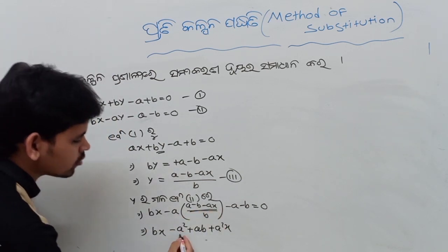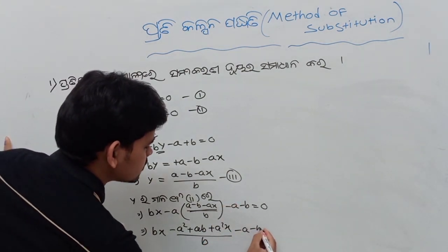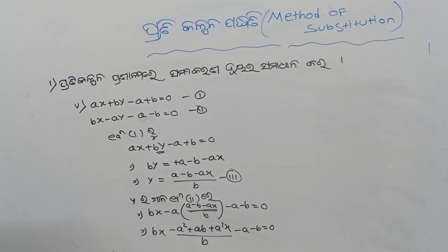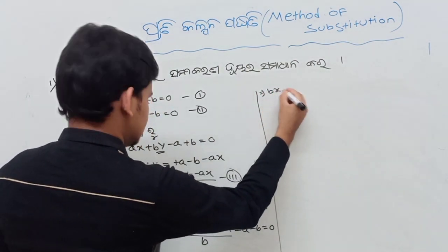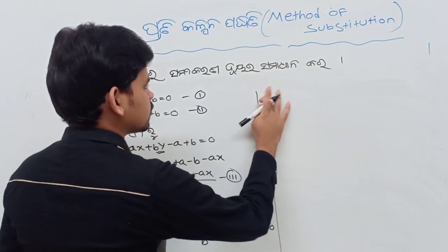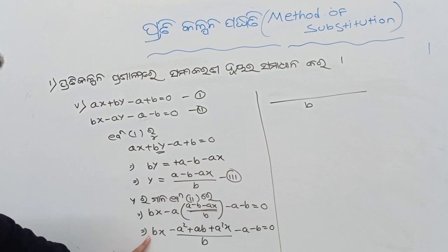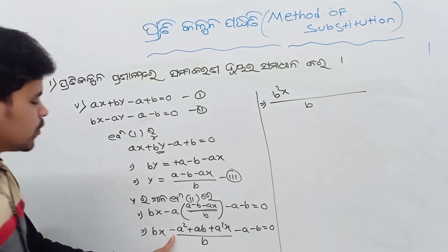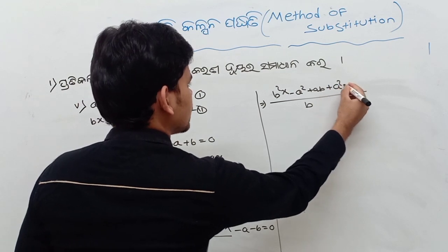How do you do that by D? Next how do you do that minus A minus B equal to 0? Next minus A minus D equal to 0. And next, how do you do that by D minus B greater than B of A? Then it is called B. BX into B — B squared x. Then it is called minus A squared plus AB plus A squared x.